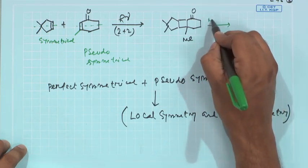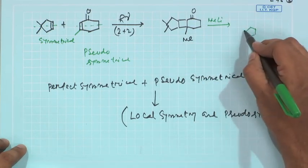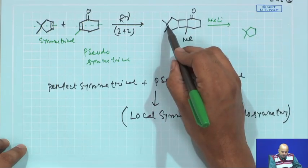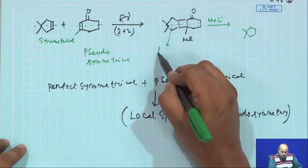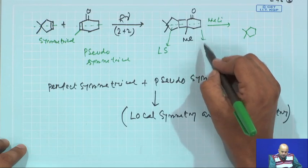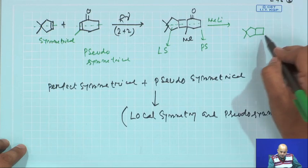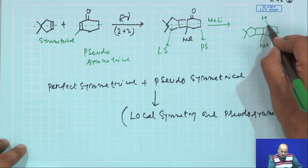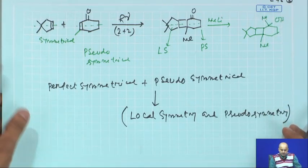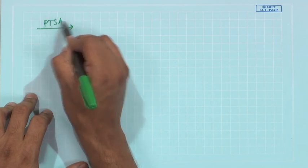As the situation demands, you must react with methyl lithium to get the additional methyl group. After the initial 2+2, this part is locally symmetrical and this part is pseudo-symmetrical — this I call LS (local symmetry) and this is called pseudo-symmetry. After methyl lithium addition, you have this methyl OH. This particular compound you treat with mineral acid or mild acid — paratoluenesulfonic acid.